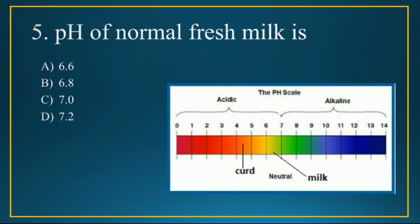Q5: The pH of normal fresh milk is — 6.6, 6.8, 7.0, or 7.2? Natural fresh milk is neither neutral nor alkaline; it is slightly acidic. The pH of fresh milk is 6.8. This natural acidity is due to its naturally occurring constituents: casein, acid phosphates, citrates, albumins, globulins, and carbon dioxide — all of which contribute to the natural acidity of fresh milk.